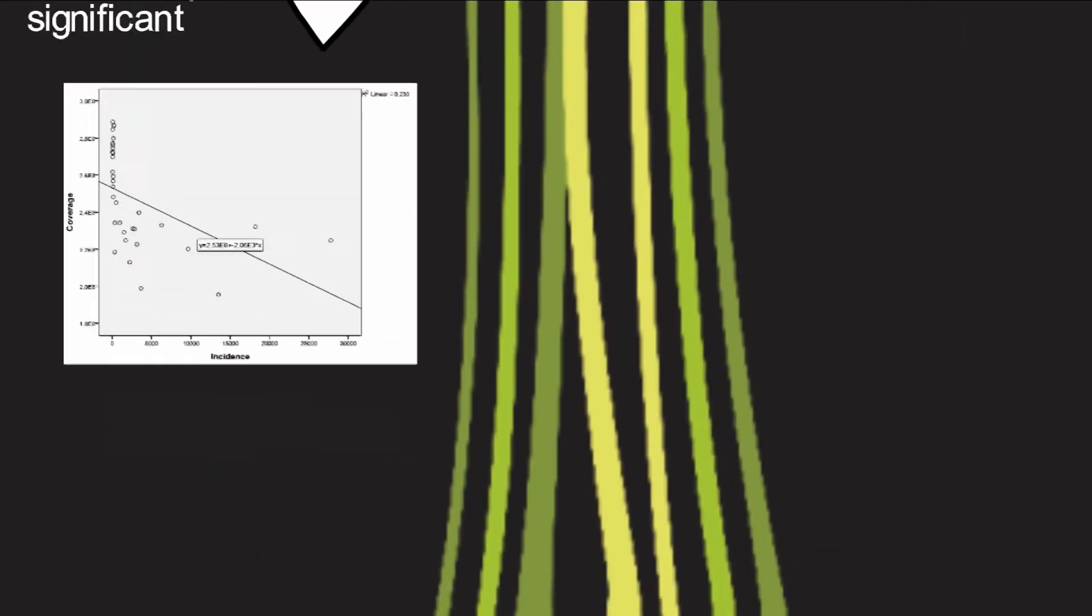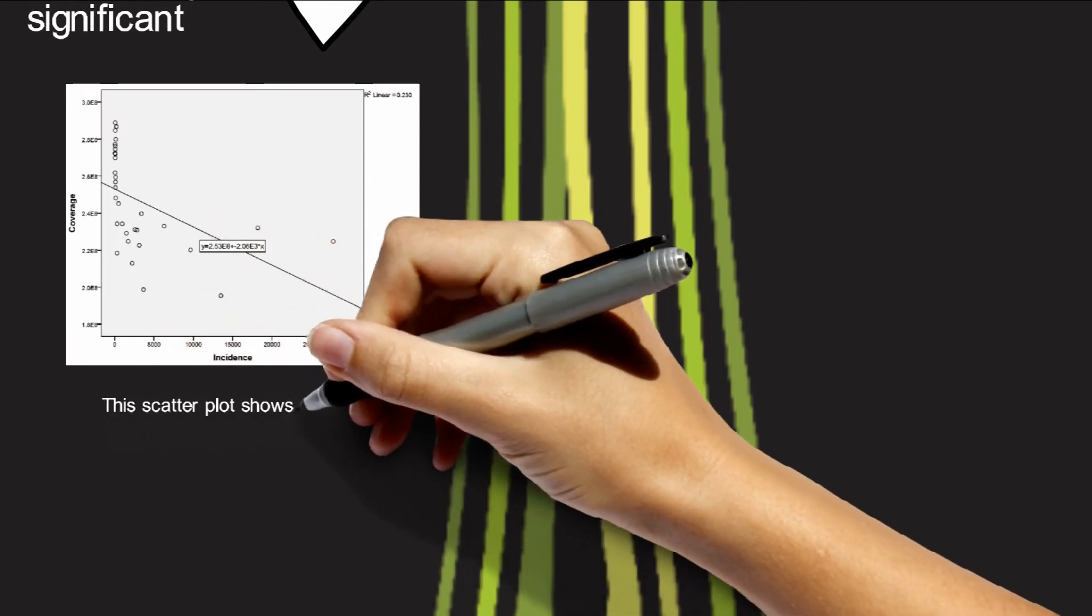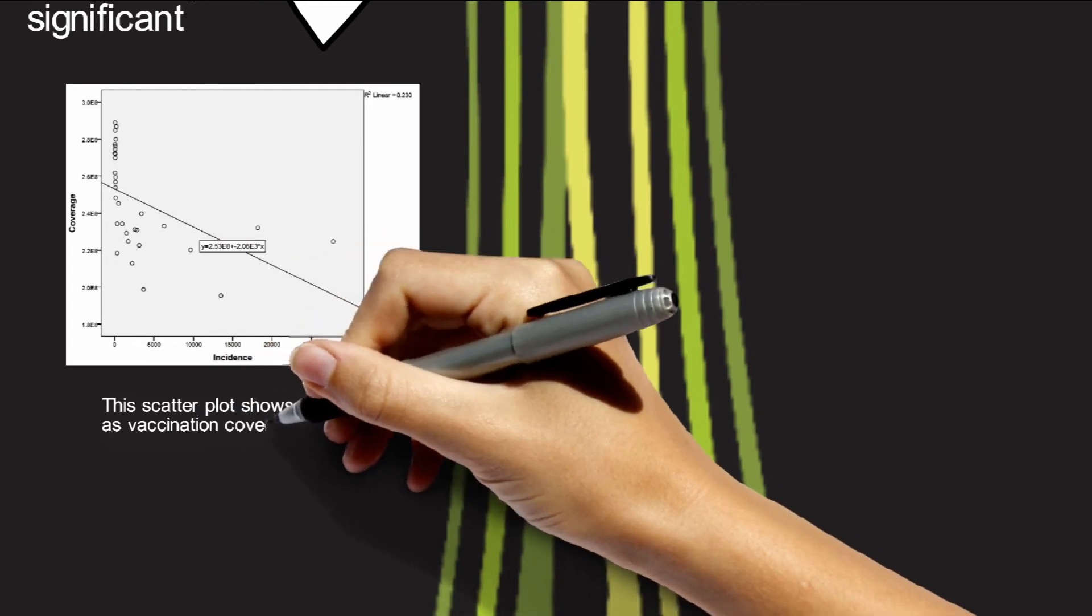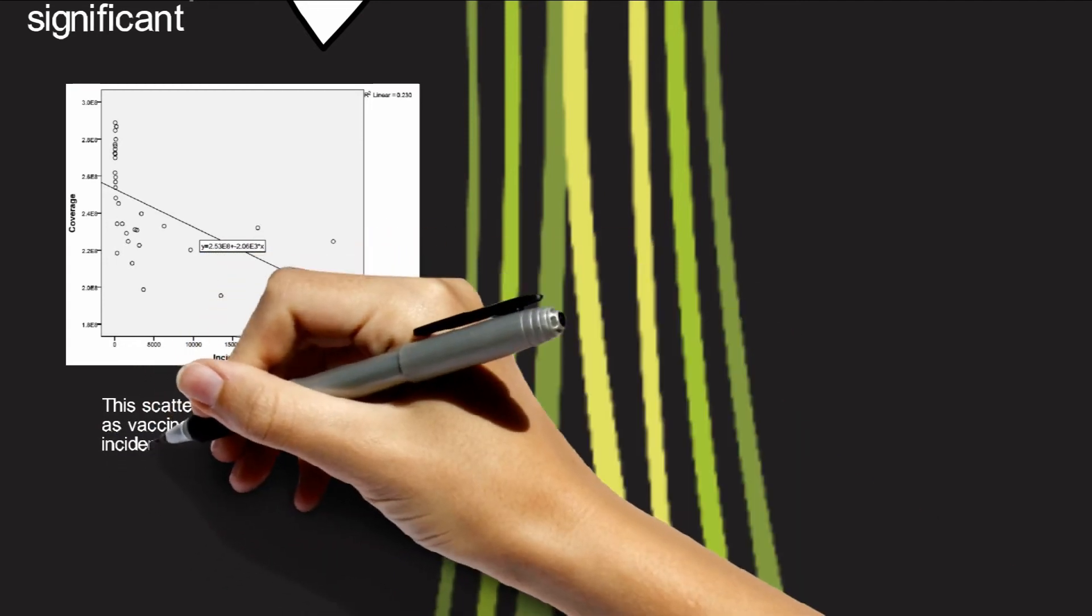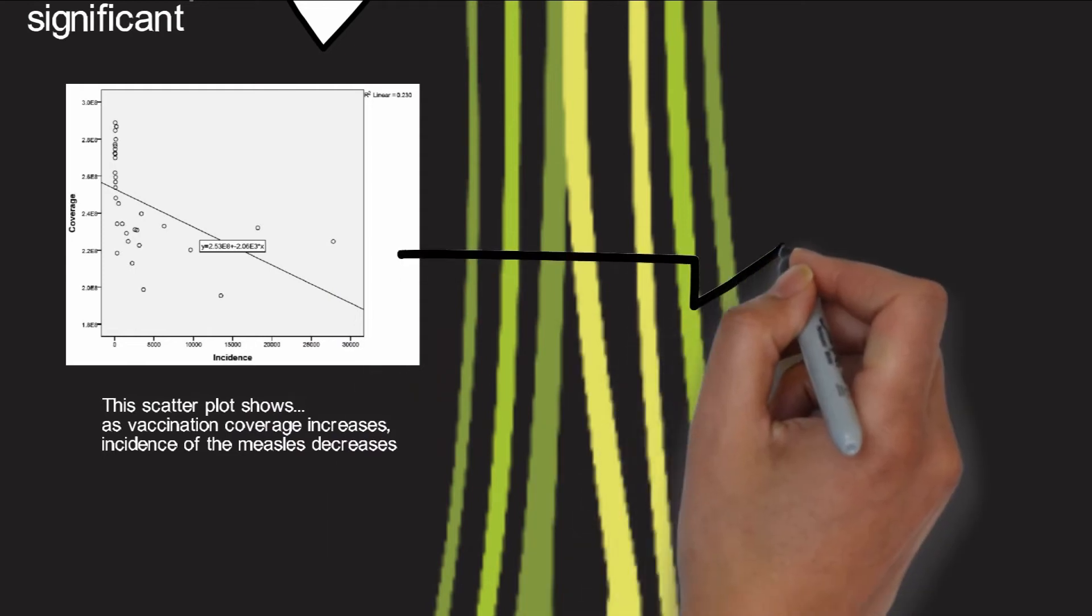Here is a scatter plot which can reveal the relationship between incidence and coverage for the United States. As you can see with the line of best fit, the general pattern seems to be that as vaccination coverage increases, incidence of measles decreases.